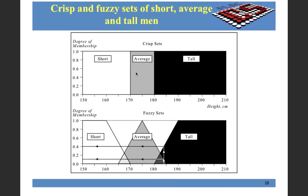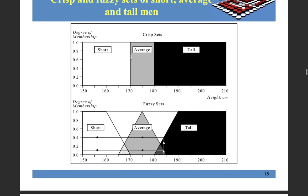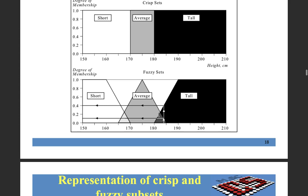If a person is short, then his height is below 170. If a person is average, his height is 170 to 180. If a person is tall, then his height is 180 above. All these have crisp boundaries. But in fuzzy sets, these boundaries are overlapping.